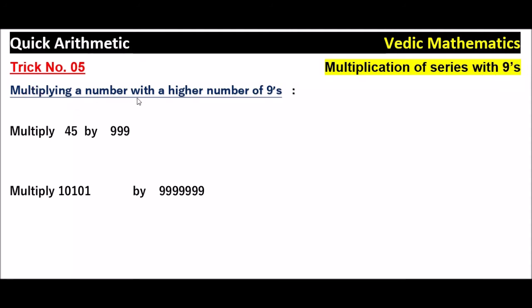Multiplying a number with a higher number of nines. See here: multiply 45 by 999. Here, only 2 digits are there in 45, and a higher number of nines — 3 nines are there. So what to do?